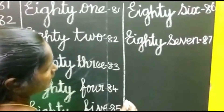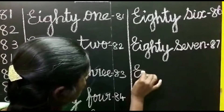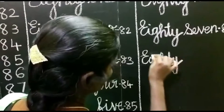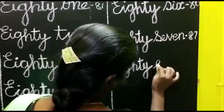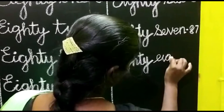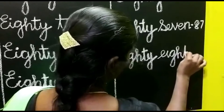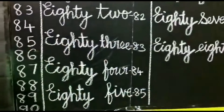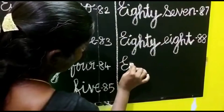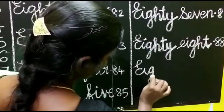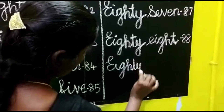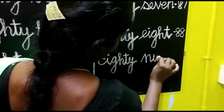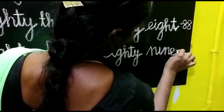Next number. 88. E-I-G-H-T-Y. 88. E-I-G-H-T. 88 is EIGHTY EIGHT. 89.